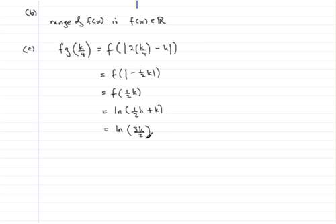So we have fg of k upon 4 expressed in terms of k as 3k over 2, and if you got that, you would have got two marks. We now move on to part D.